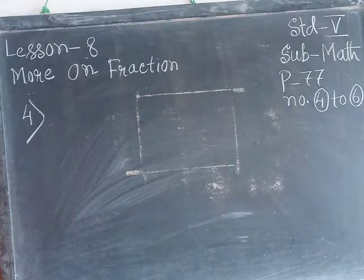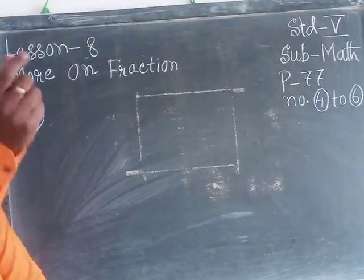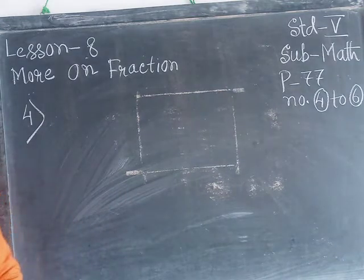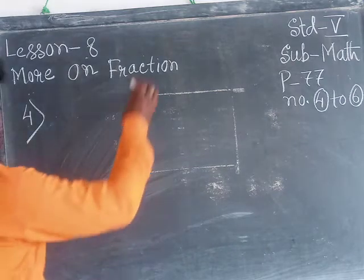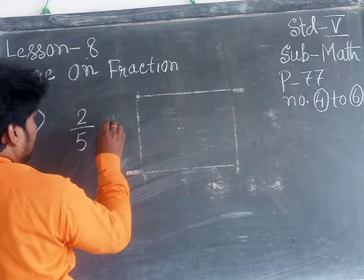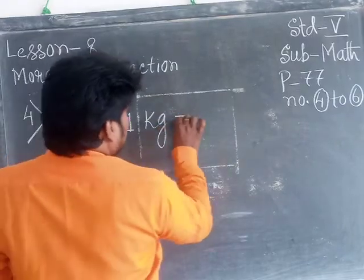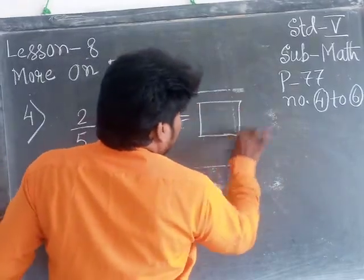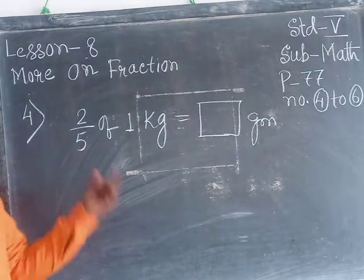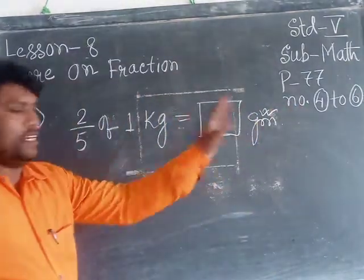So in these chapters we will solve problems just like this. Suppose two-fifths of one kilogram equals how many grams. At first, read very carefully: two-fifths of one kilogram, and your answer will be in the unit grams.